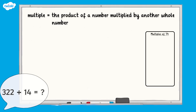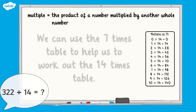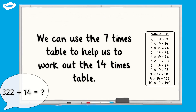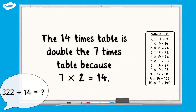Here are the first multiples of 14 up to 10 times 14. To do this, think about the times tables and maths knowledge that could help you. In this case, the 7 times table is really useful because if you double 7, you get 14. So the 14 times table is double the 7 times table. These multiples of 14 will be really useful when completing our division calculation.